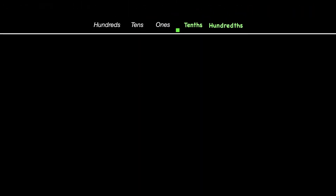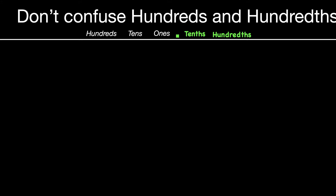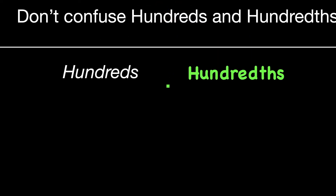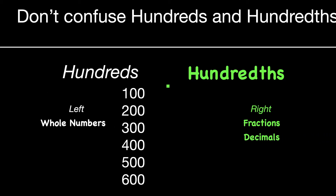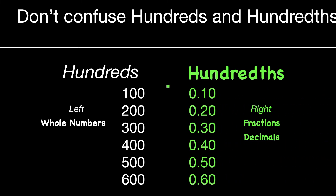It would be read as sixty-seven hundredths. It's important to not confuse hundreds and hundredths — that's a really common problem. On the left side you have hundreds, but hundredths are on the right side. Remember that hundreds on the left represent whole numbers, but hundredths on the right side represent fractions, or in other words, decimals. Hundreds you would count as one hundred, two hundred, three hundred and so on. Whereas hundredths, if you were counting, would be ten hundredths, twenty hundredths, thirty hundredths, and so forth. Remember that hundredths has the TH, so be looking for that.